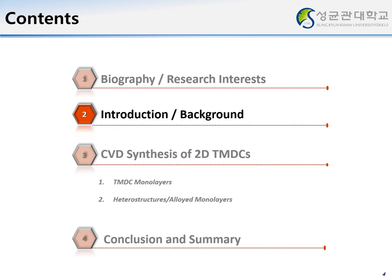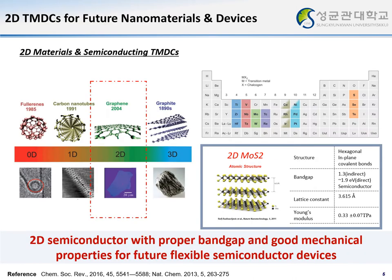From here, I will briefly introduce about the 2D semiconductors. 2D materials have attracted significant attention ever since the exfoliation of single layer graphene in 2004 at the University of Manchester. Graphene has outstanding electrical, thermal, and mechanical properties, yet they do not have a band gap, meaning that they are not suitable as a channel material for transistors and phototransistors. In this regard, researchers tried to find other 2D materials such as TMDC materials that have a proper band gap — a group of materials called transition metal dichalcogenides, or TMDCs.